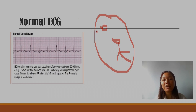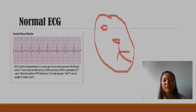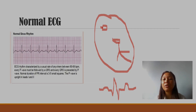In normal ECG, when the sinoatrial node will generate electricity, it will be passed to every node. This is the normal ECG pattern — P wave followed by Q, R, S, T. Let me draw it clearly. This is the normal ECG pattern.